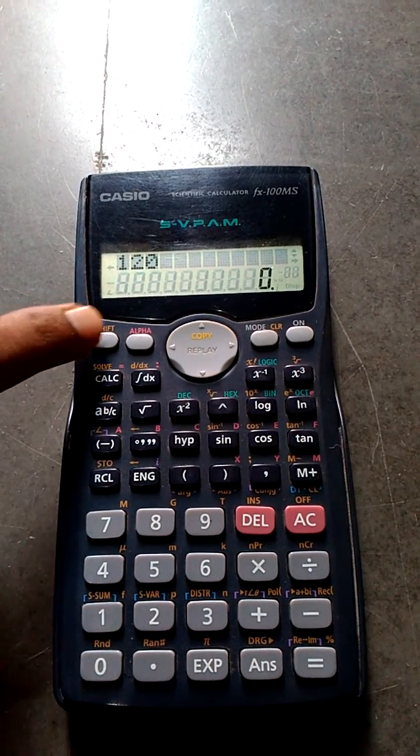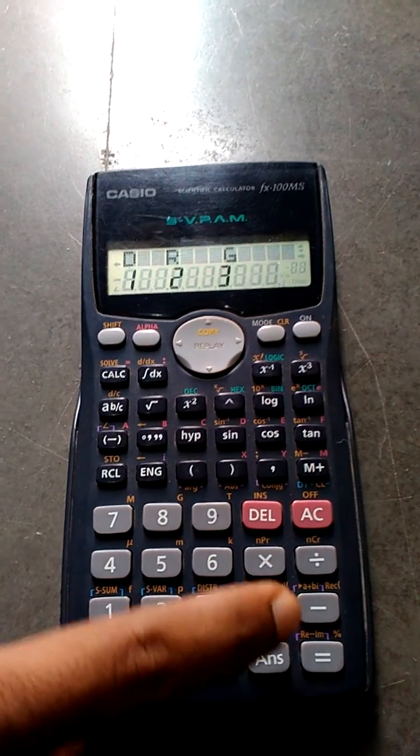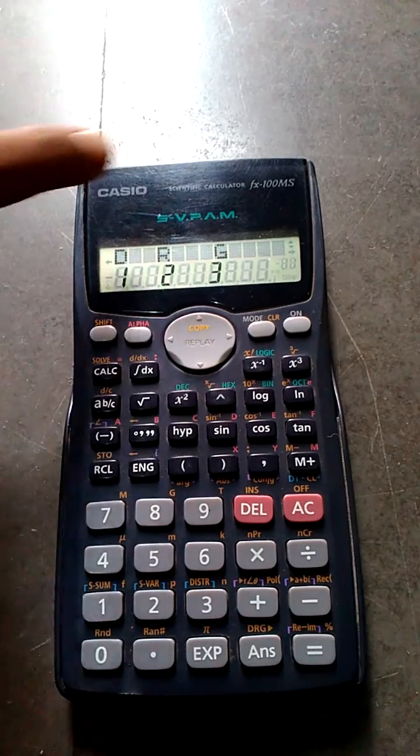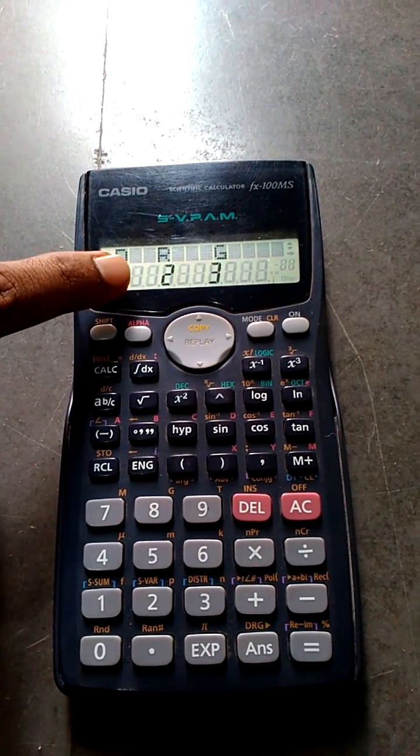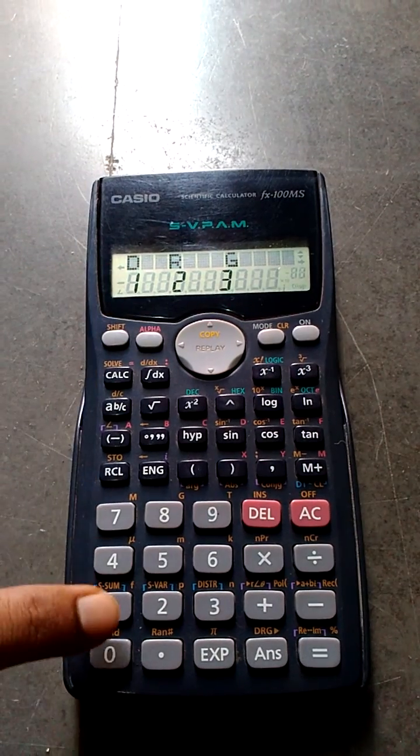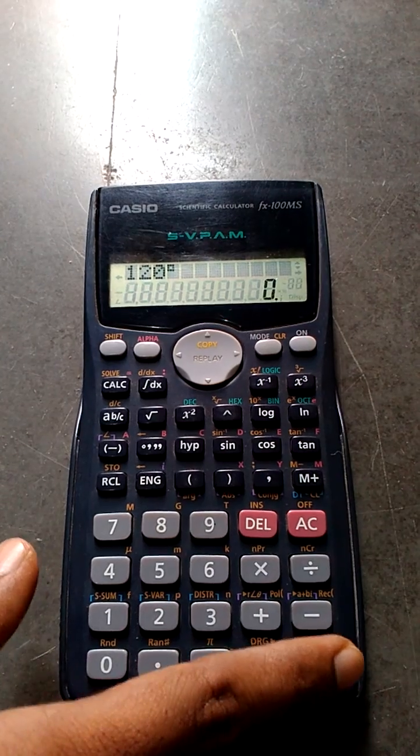Then next, press shift button plus answer button. So in the answer button we get three options again: degree, radian, and G. So in this you need to select degree option, that is press one button, then press equal to.